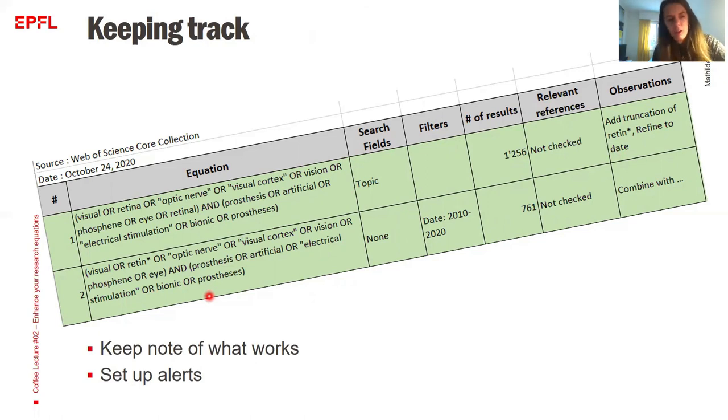You can, we advise you that you keep track of equations that work for you. At least because then you will be able to rerun the equation sometimes later. Maybe at the end of the project, we want to check that you didn't miss anything that was published in the meantime. In the course of a PhD project, it can be useful to check sometimes in between as well. That's why also you could set up alerts.